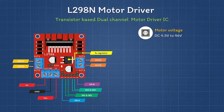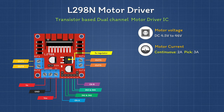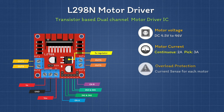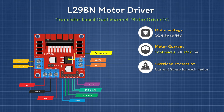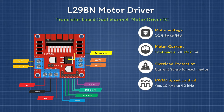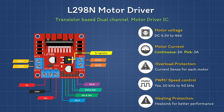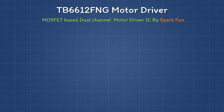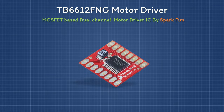Key specifications of the L298N: motor voltage up to 46 volts; each channel can handle up to 2 amps continuously and 3 amps at peak. There is a current sense for each motor to help protect the driver at overcurrent. It supports PWM signals up to 40 kHz to control motor speed, and the module has a built-in heatsink to enhance heat dissipation.